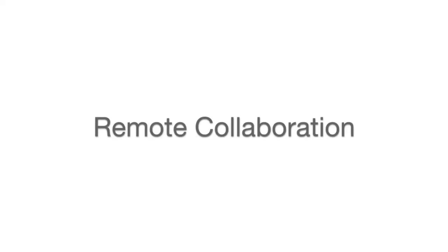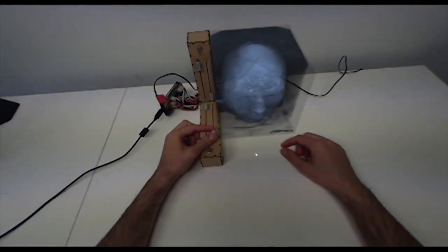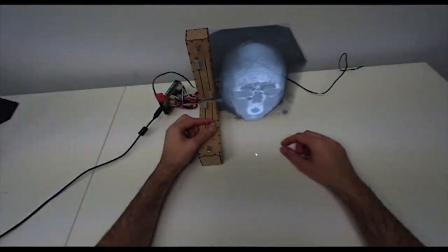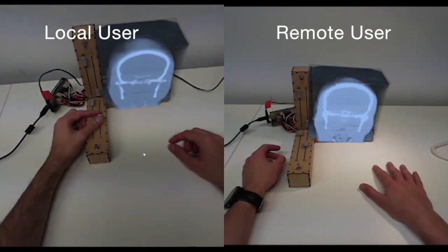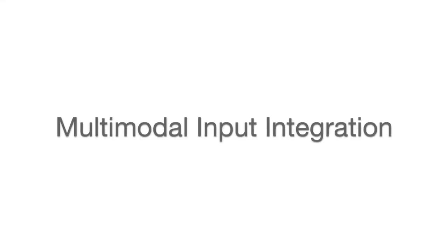To explore remote collaboration between two users, we replicated the Embodied Axis prototype device and created a network layer. We tested this setup between two Australian cities and observed that the device can potentially provide a valuable cue for increasing the sense of presence of the remote collaborator.